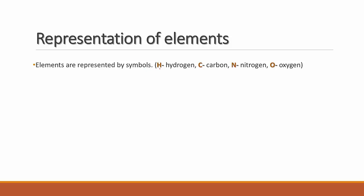The simplest form is by giving the first alphabet of the element's name. H is hydrogen, C is carbon, N is nitrogen, and O is oxygen. The first letter from each name is used as the symbol. This is one very simple way of representing elements.